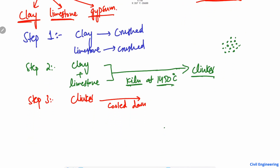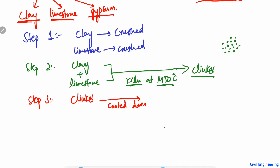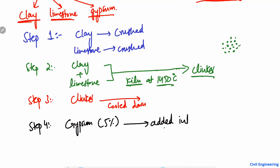In step number four, a very important step: gypsum is added. A gypsum material of five percent is added into the clinker. So the clinker is 95 percent and gypsum is five percent, making a total of 100 percent.